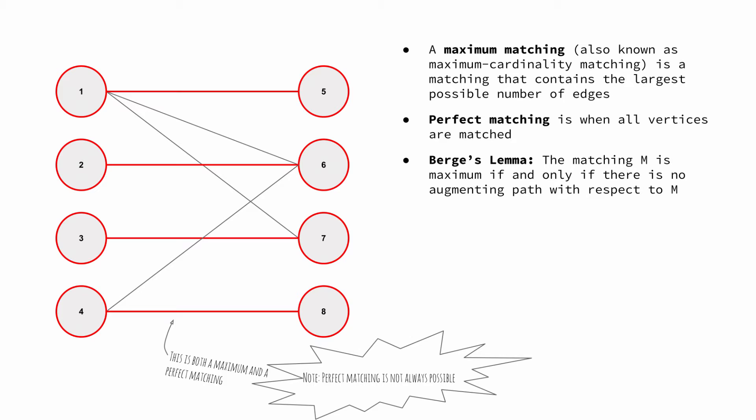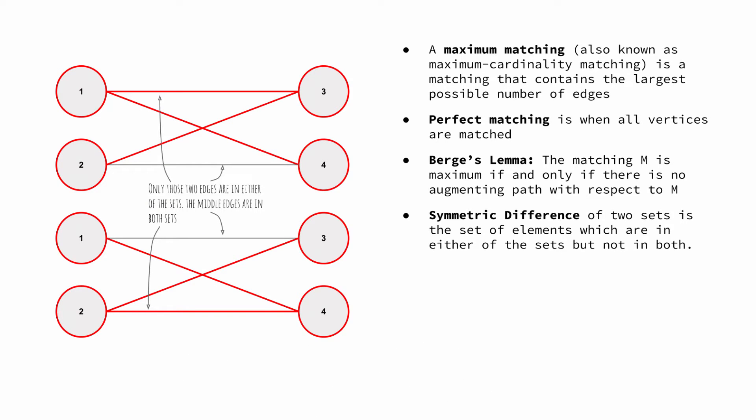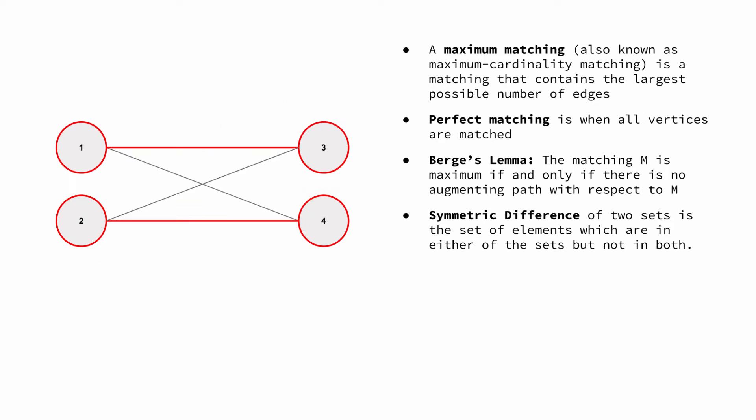Berge's lemma is the basis of the algorithm we are covering today. Basically what it says is that when an augmenting path is available, there exists a better solution than the current one. The symmetric difference is like the XOR operation of sets. Only edges that are included in one of the sets will be in the resulting set. Of course the graph here is to demonstrate this operation does not comprise a valid matching because there are more than one edges connected to a single vertex.